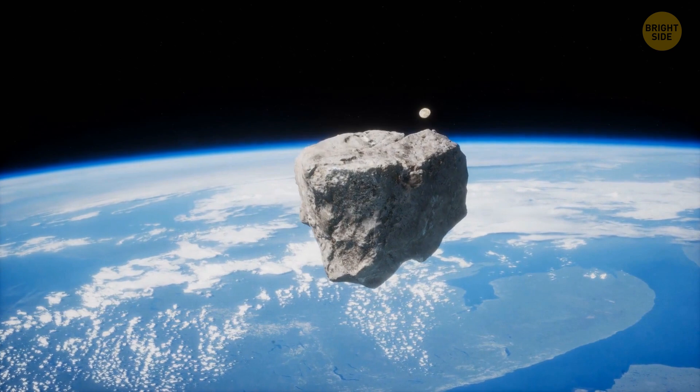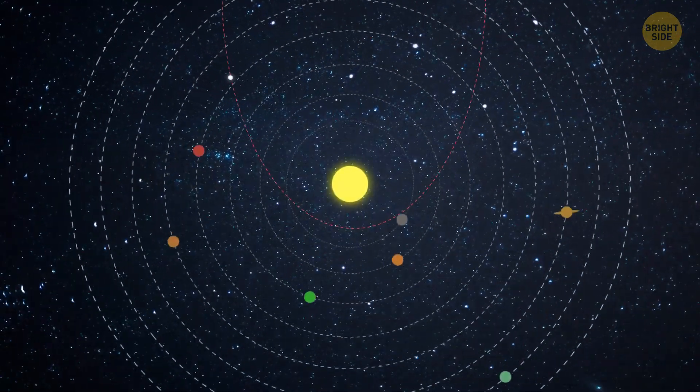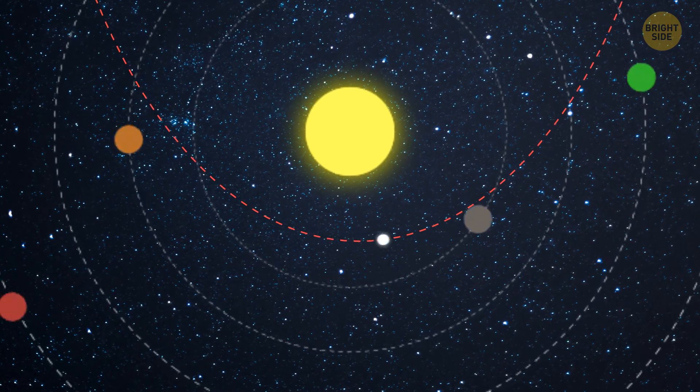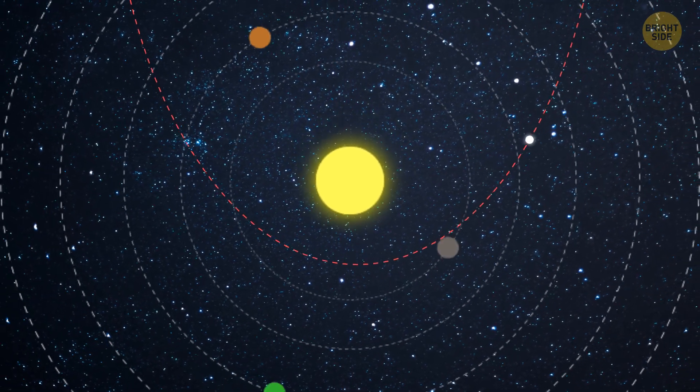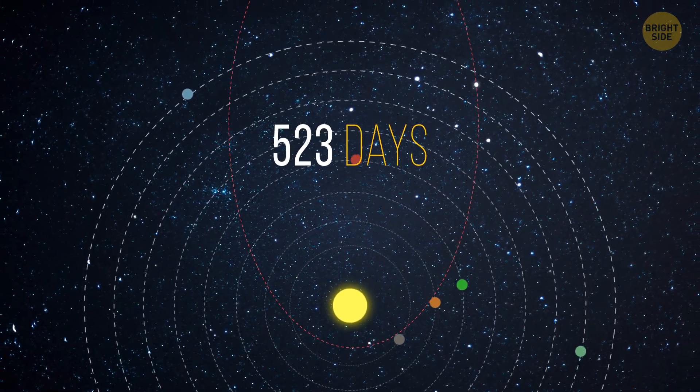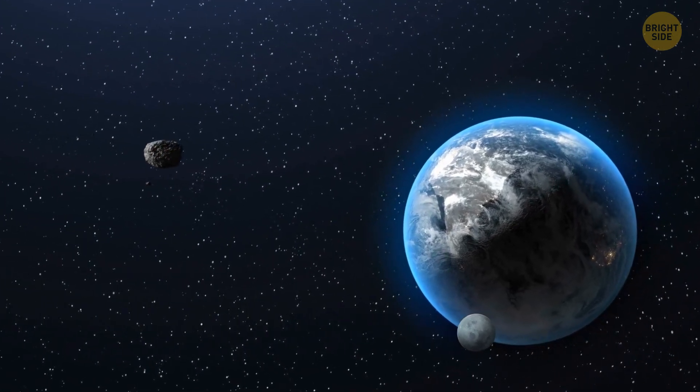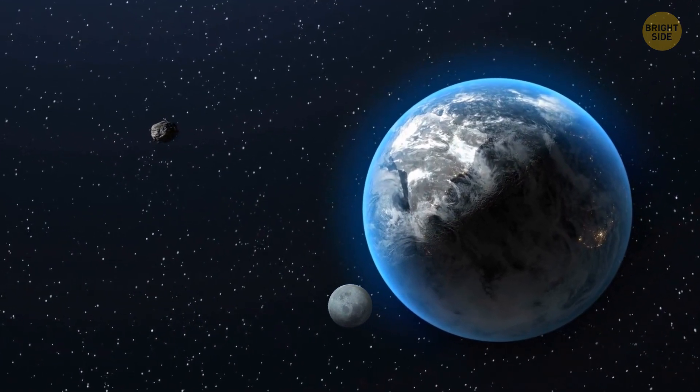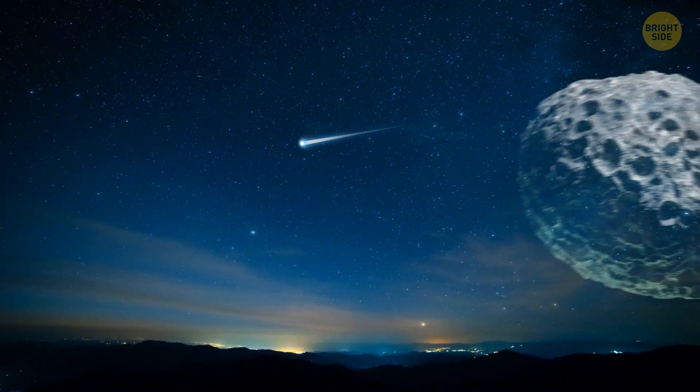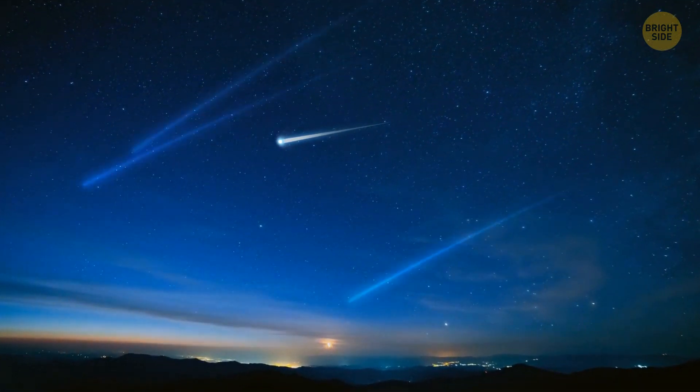Right now, we have other meteorites to worry about. For example, 3200 Phaeton. It crosses the orbits of Mars, Earth, Venus, and Mercury. Then it goes around the sun and comes back. This cycle takes about 523 days. Then it starts over again. This meteorite is considered potentially hazardous because it crosses Earth's orbit at 7.5 Earth-Moon distances. During one of its last approaches to Earth, this 3.6-mile-wide block of rock showered our planet with small meteors.